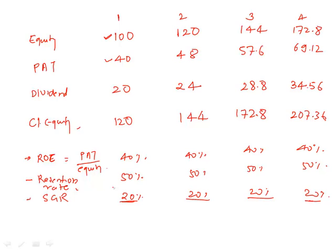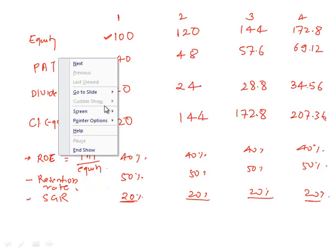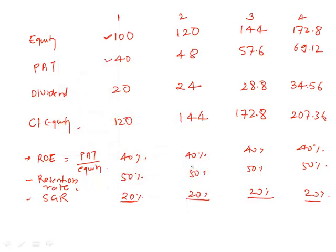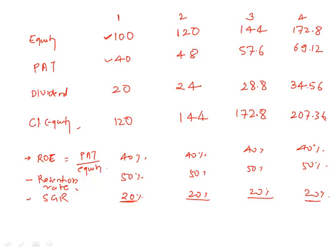Now see this part carefully, let me change the color of the ink. First thing is let us find out the growth rate in equity. First year it was 100, next year it became 120. What is the growth rate? 20 percent. 120 it became 144, what is the growth rate? 20 percent. And 172 from 144 is also 20 percent. That means the sustainable growth rate is telling you at what rate your equity capital is going to increase.